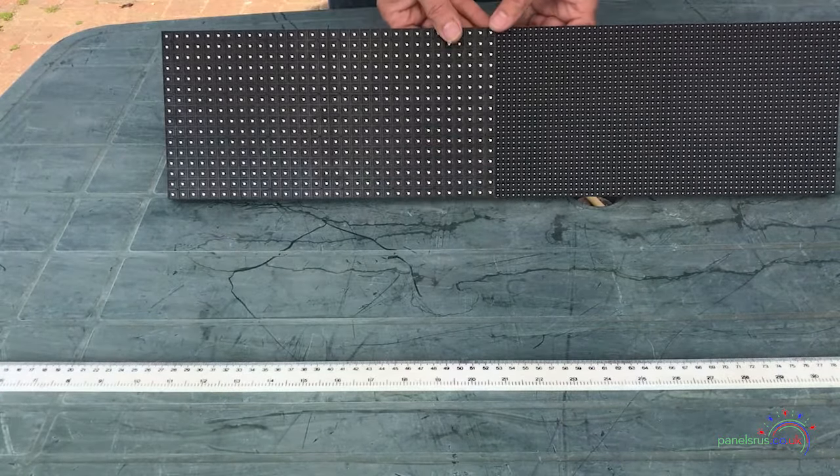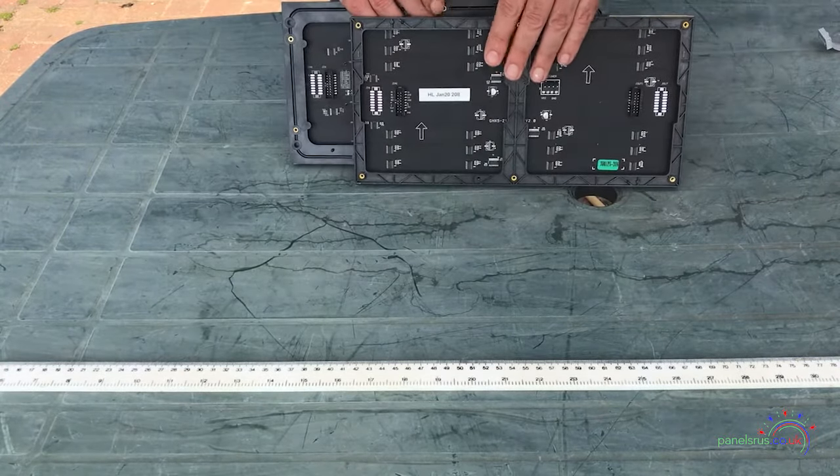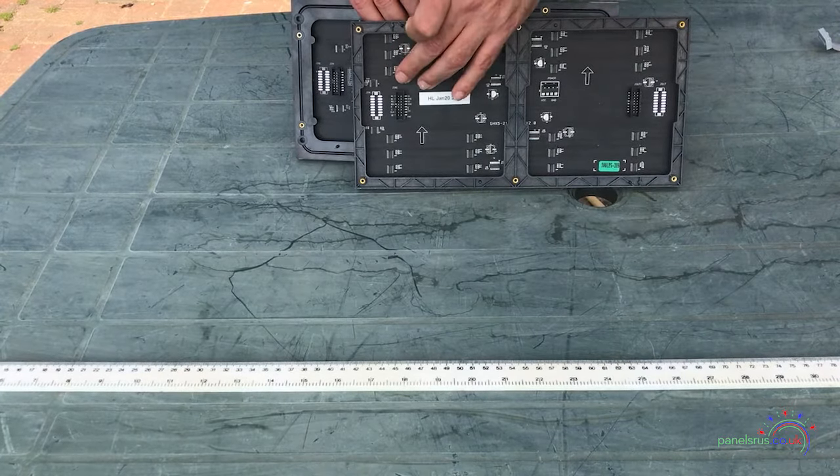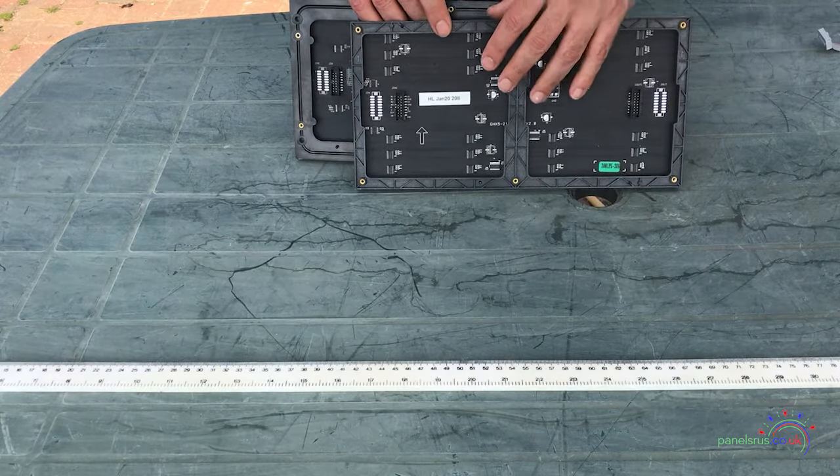So there's your standard P5 and P10. I'll just flip back. These of course can be daisy-chained, so we get data in here at JIN and data out from JOUT, which then moves on to the next panel.